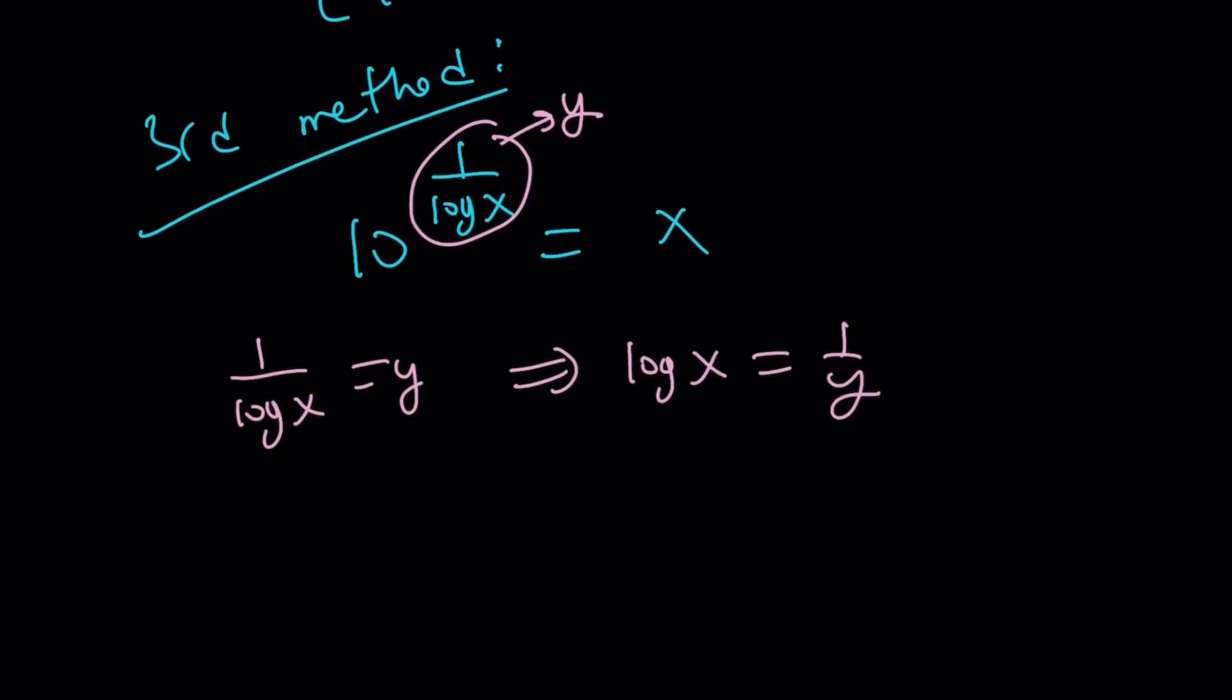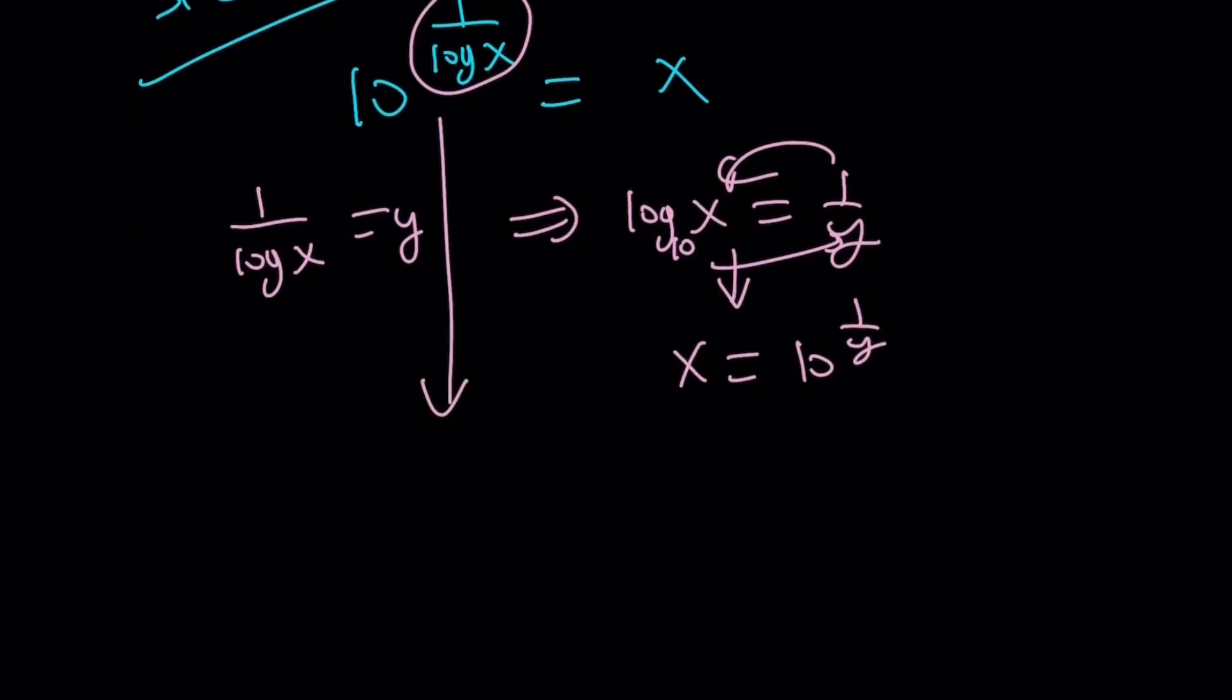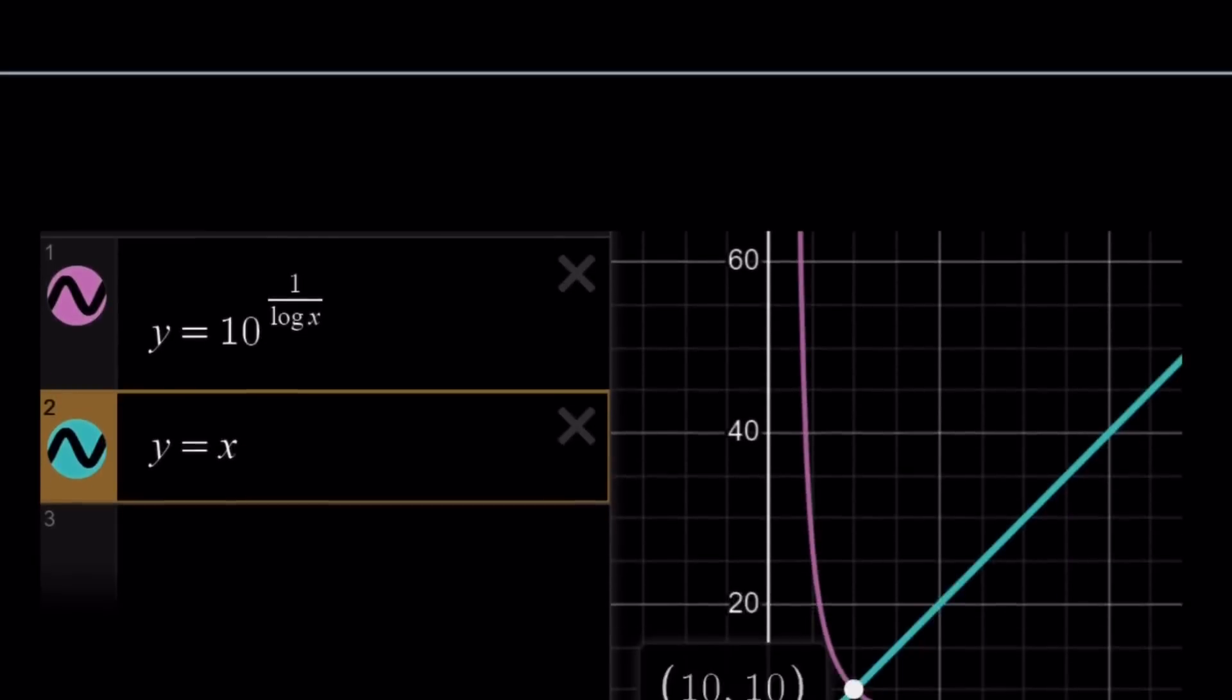We're going to get 10 to the power y on the left hand side. But what about the right hand side? This is log x, so base 10. Use the rule. Cross the bridge. We get x equals 10 to the power 1 over y. So we get 10 to the power y equals 10 to the power 1 over y. And from here the exponents are equal, y equals 1 over y. And we get the same idea. So it leads to a solution.